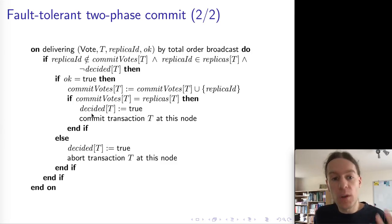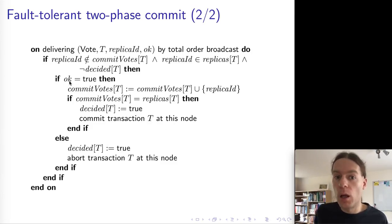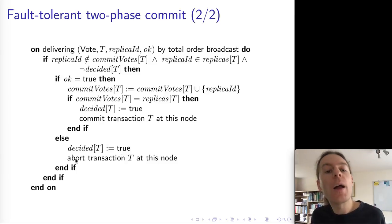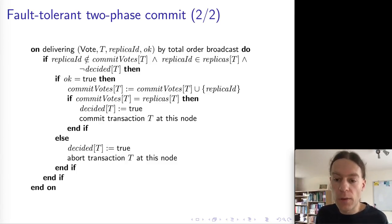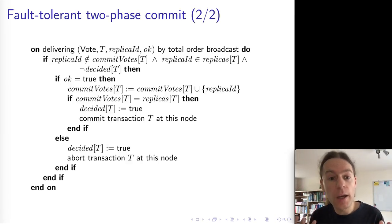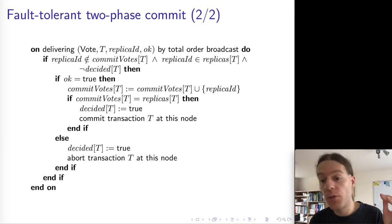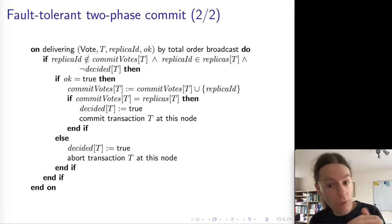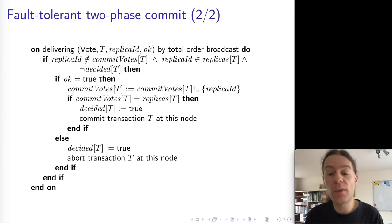We can ensure that the first vote seen from a given replica is the same for all nodes. Whenever we deliver one of these votes via total order broadcast, we consider only the first vote from any given replica and ignore any future votes. This ensures all nodes come to the same decision on whether to commit or abort. If a replica votes true, we add its ID to the set of replicas that have voted in favor; if that set equals the full set of participating replicas, we have the required unanimity and commit. If any vote is false, we immediately abort, set the decided flag to true, and abort the transaction at this node.